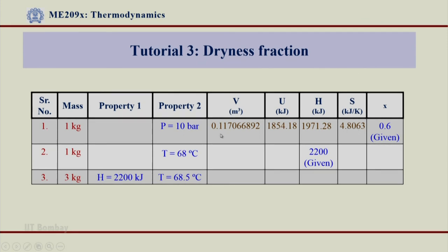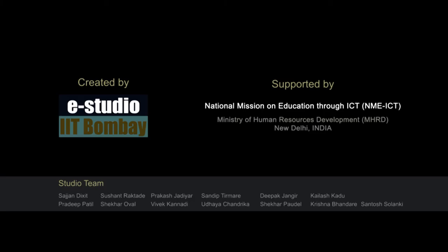Importantly, when x is given, I know that is a two-phase and therefore we have to go to table 1 or table 2, get Vf and VfG, Uf and UfG, Hf and HfG, Sf and SfG and get those values. Next one.